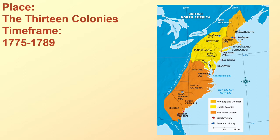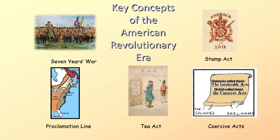Placing the 13 colonies in the time frame of 1775 to 1789 or so. Key concepts of the American Revolutionary Era still include the Seven Years' War, as well as other things like the Proclamation Line, the Tea Act, the Coercive Acts — also known as the Intolerable Acts — and the Stamp Act.